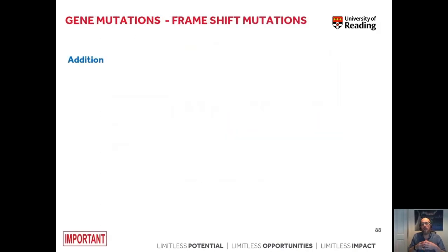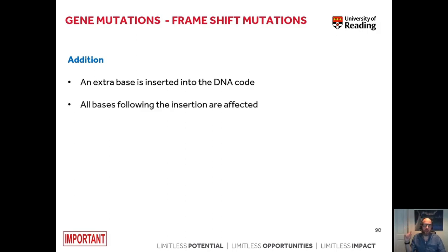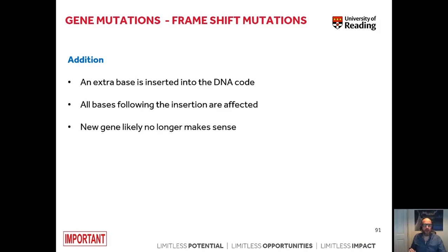What types of gene mutations can occur at the level of single genes? First, we can have an addition, where an extra base is inserted into the DNA code. Because the genetic code is a triplet code, all of the bases following the insertion will be affected, and the new gene is highly likely to be no longer functional.